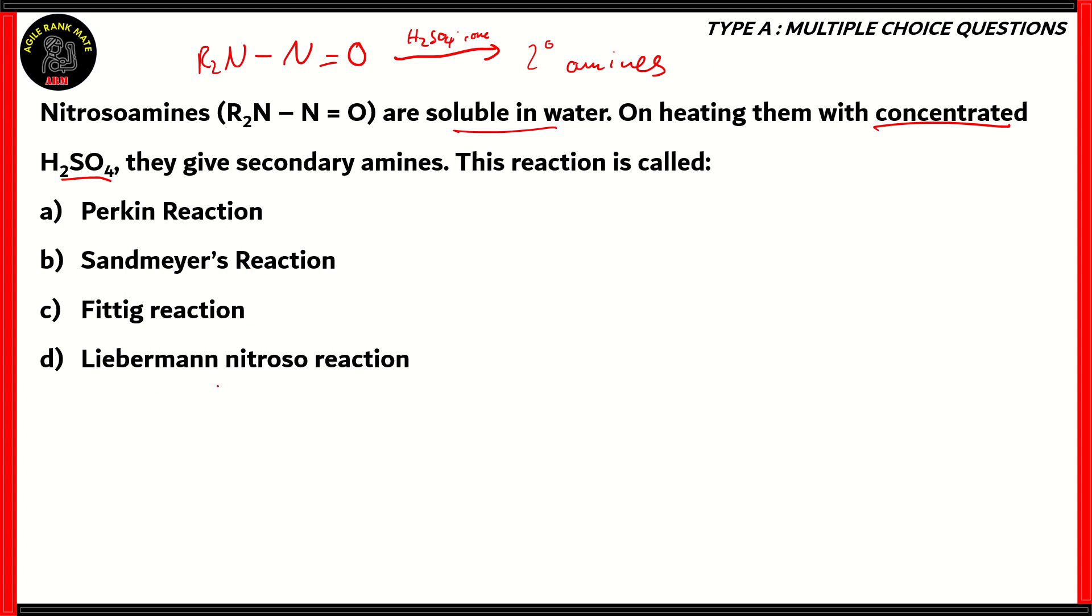The four reactions given are Perkin reaction, Sandmeyer's reaction, Fittig reaction, and Liebermann nitroso reaction. Now Fittig reaction, option C, forms diphenyl from aryl halides. So if you have two aryl halides and then when you mix them with sodium and ether, you form diphenyl along with sodium halide. Therefore Fittig reaction does not involve nitroso amines, so therefore option C is incorrect.